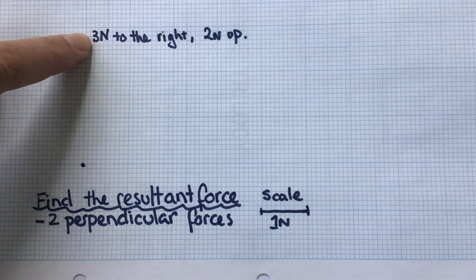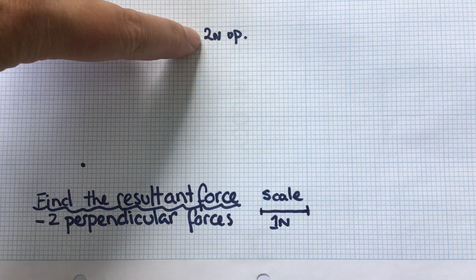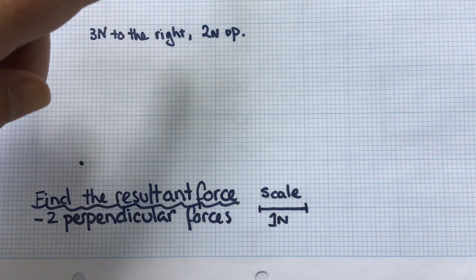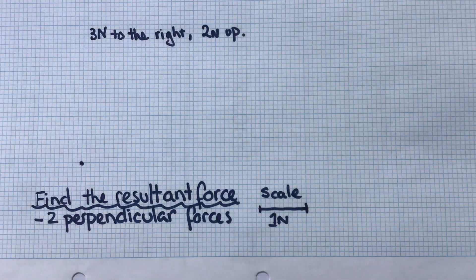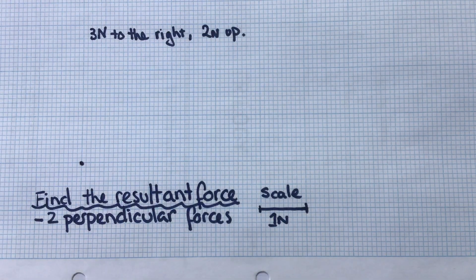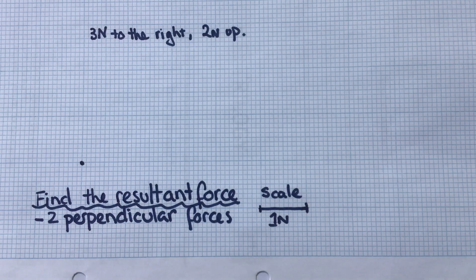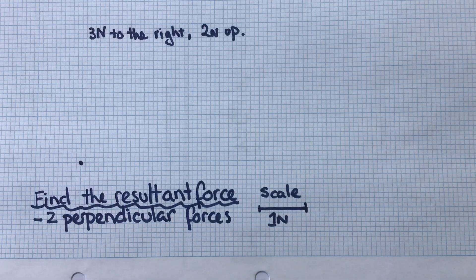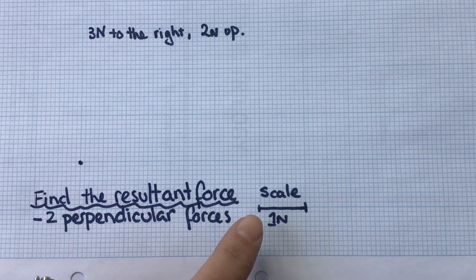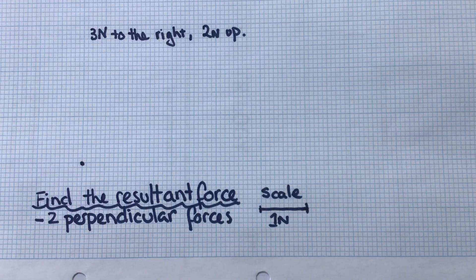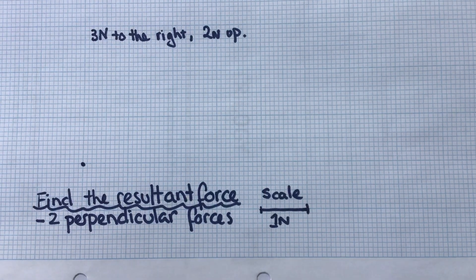Because we're using the scale diagram method for the physics GCSE, we've got our scale marked down here. We're saying that one large box is equivalent to one newton on our scale.